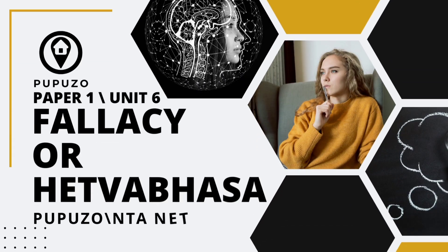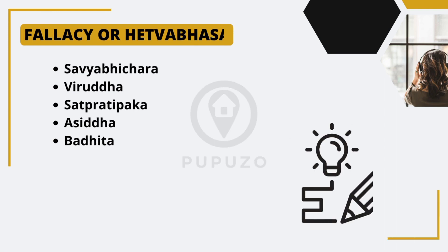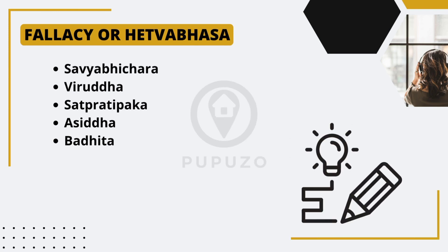Sardabhichara, also known as the fallacy of irrelevant reason, occurs when an argument includes irrelevant or unrelated premises that do not support the conclusion. The reasoning deviates from the main point, weakening the argument. An example is when someone argues that because a person is a philosopher, they must be a good singer, even though there is no logical connection between being a philosopher and being a good singer.